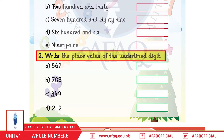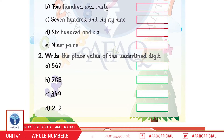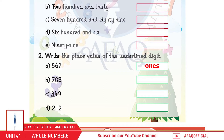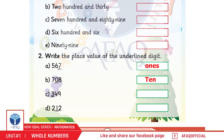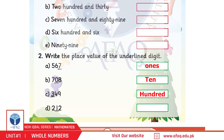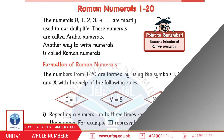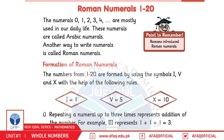Question number 2: Write the place value of the underlined digit. A: 7 in 567 — ones. B: 0 in 708 — tens (10). C: 3 in 349 — hundreds (100). D: 1 in 2012 — tens (10).